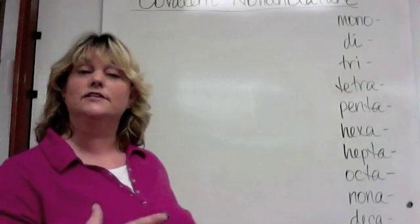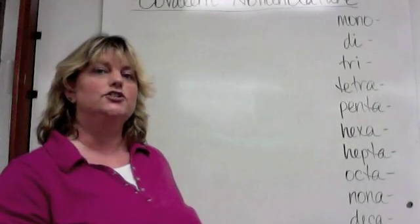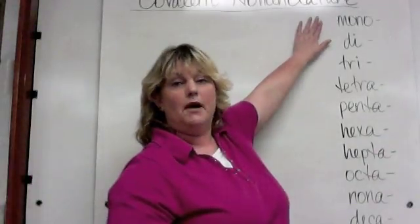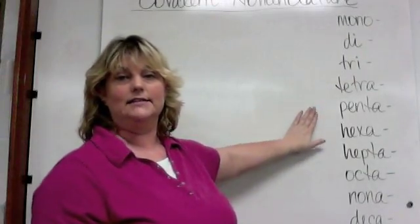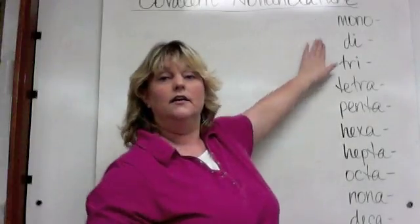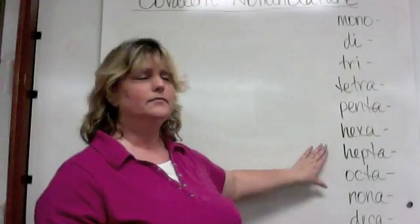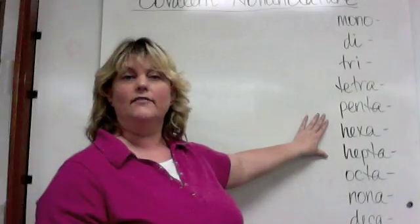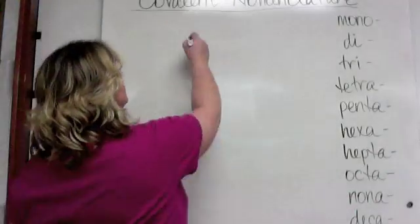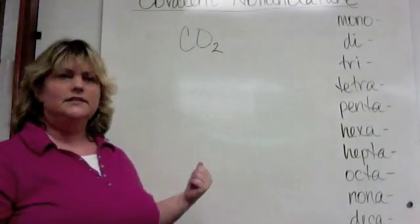Instead of using ratios and charges the way ionic nomenclature does — because we have no charges, we're sharing electrons — we use these prefixes: mono, di, tri, tetra, penta, hexa, hepta, octa, nona, deca. These represent one through ten. You need to memorize them, and they'll also help you recognize that you have a covalent compound.